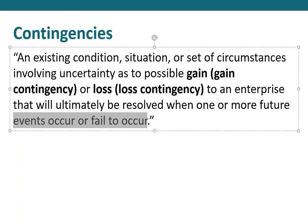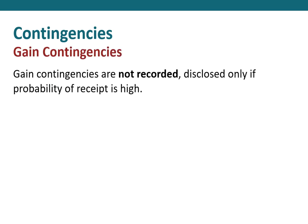Let's take a look at gain contingencies first, then we'll discuss loss contingencies. The most important thing to know about gain contingencies: they aren't reported — we don't record them. They are disclosed only if the probability of receipt of the future amount is high. We do not record them on our financial statements; we only disclose them in the footnotes.